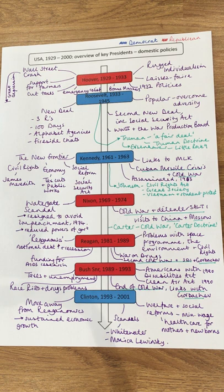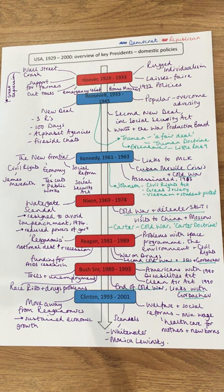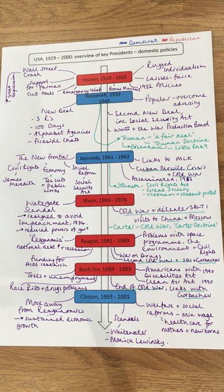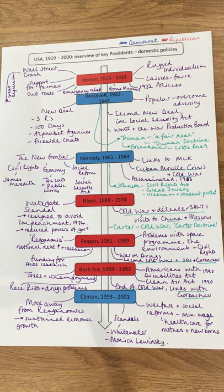Roosevelt died in April 1945 and Truman took over the presidency. He talked about a fair deal for the American people. Linking to the Cold War element of the course, Truman was the figure behind the Truman Doctrine, with the fear of the domino theory and then the implementation of the Marshall Plan. Eisenhower took over after Truman, and it was Eisenhower who sent the military to support the Little Rock Nine as part of the civil rights portion of this course.